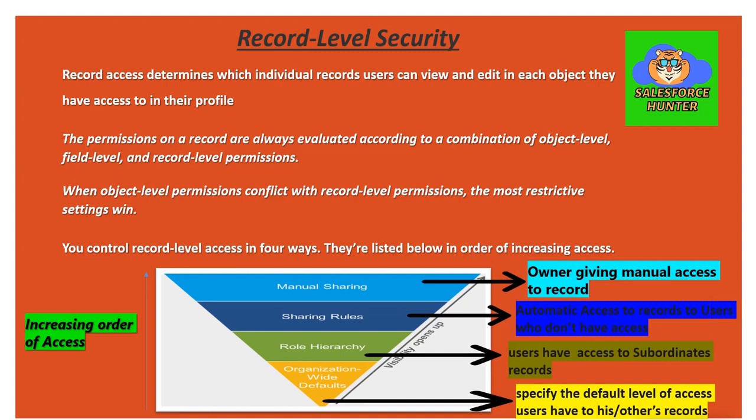The first point: record access determines which individual records a user can view and edit in each object they have access to in their profile. The permissions on a record are always evaluated according to a combination of object, field level, and record level permissions. When object level permissions conflict with record level permissions, the most restrictive settings apply.